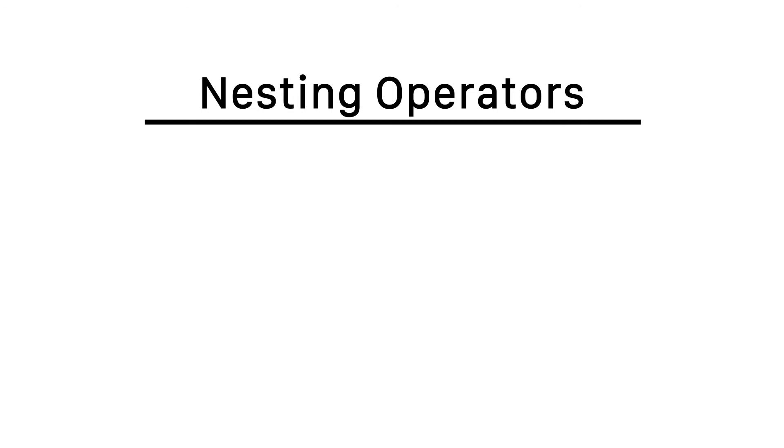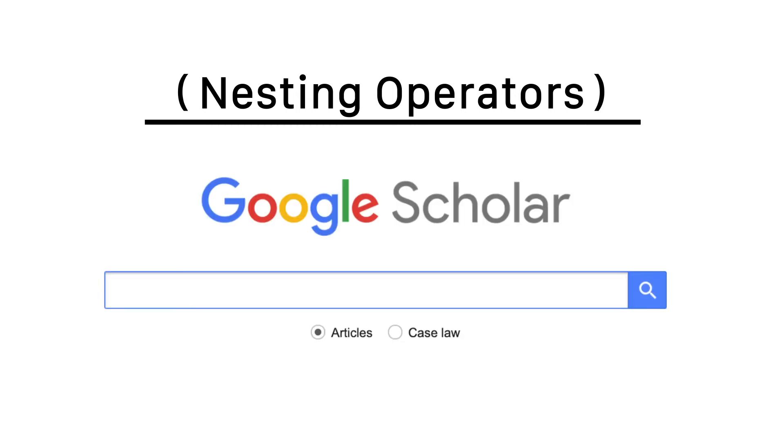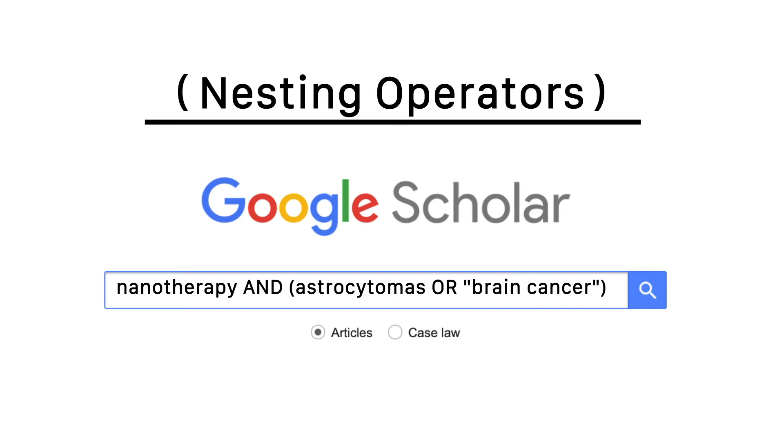You aren't limited to using only one operator per search. If we want to use multiple operators in connection with each other, we can use the nesting operators. Just like in math when you put parentheses around a part of an equation that needs to be taken together, you can put them around part of a search. When you get good at using them, you can come up with incredibly refined searches that will increase your chances of finding the articles you need, while sorting out anything you don't want.